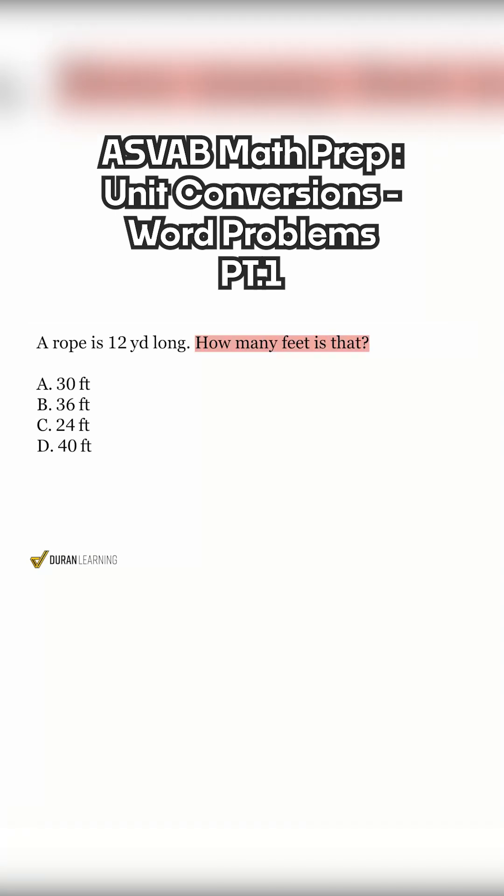So we know we're trying to get to feet, and the unit that we're coming from is yards. So it says 12 yards. We want to know the translation from 12 yards to the number of feet.